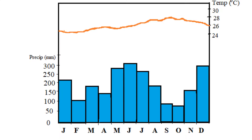The bars on the climate graph show that there is rainfall every month in equatorial regions. As such, the total annual rainfall is heavy, usually exceeding 2000 millimeters.